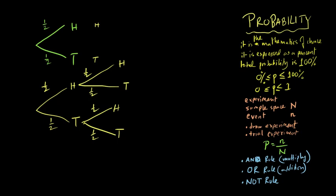The sample space after tossing the coin twice includes: head and head, head and tail, tail and head, and tail and tail. These are all the possible outcomes — that is the full sample space for tossing a coin twice.